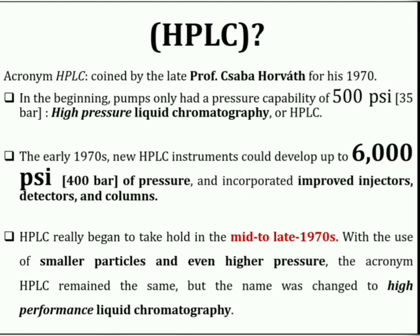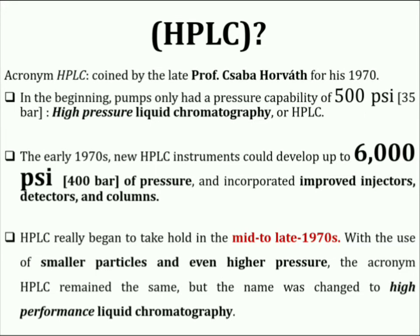The early 1970s saw a tremendous leap in technology. These new HPLC instruments could develop up to 6000 psi of pressure and incorporated improved injectors, detectors, and columns. HPLC really began to take hold in the mid to late 1970s with continued advances in performance. Smaller particles and even higher pressures were used, and the acronym HPLC remained the same but the name was changed to high performance liquid chromatography.